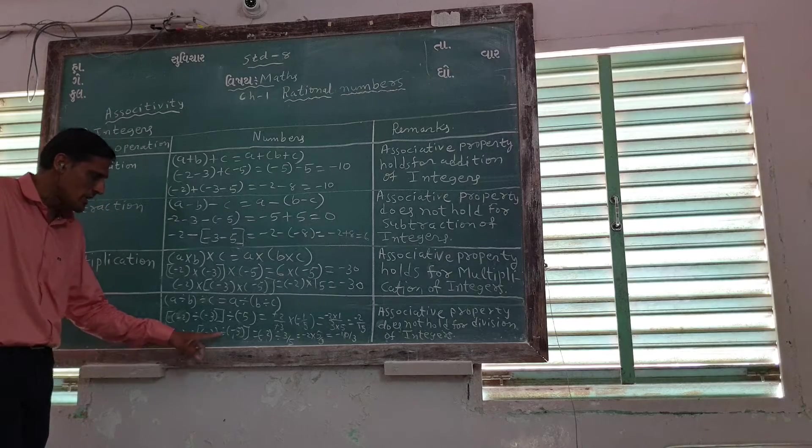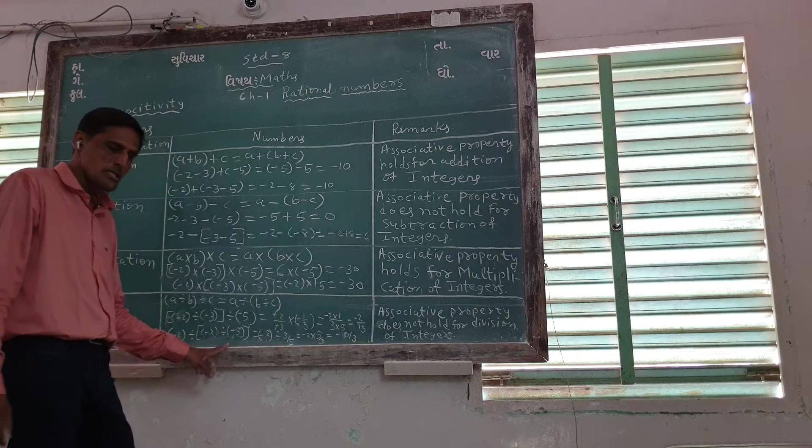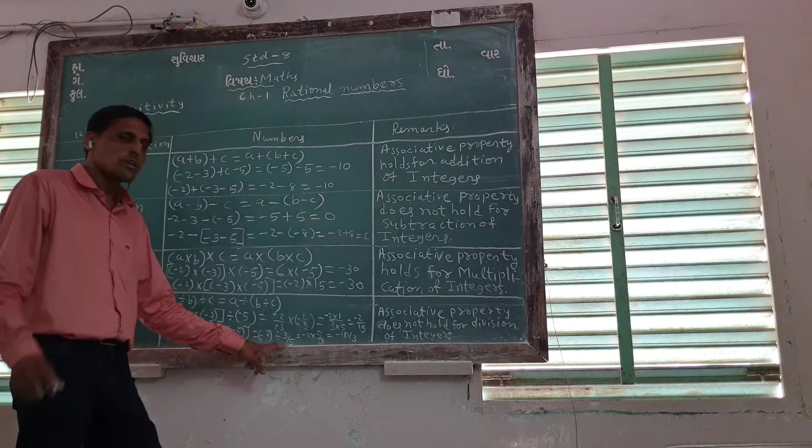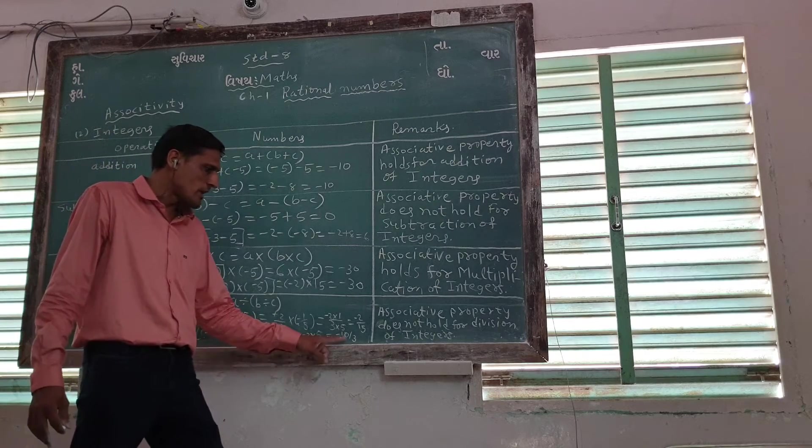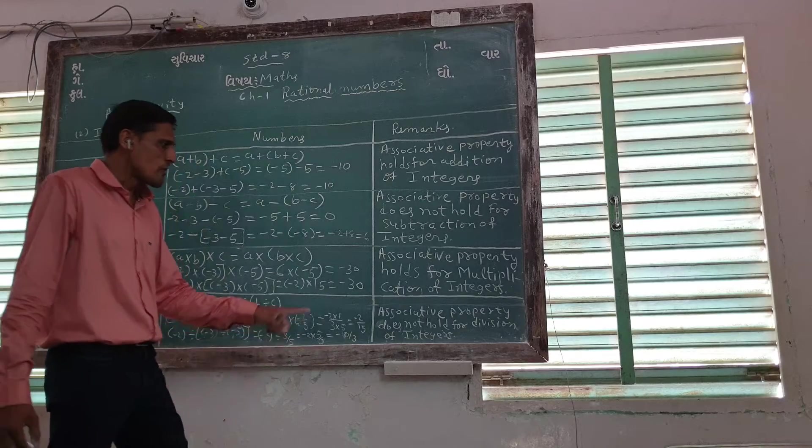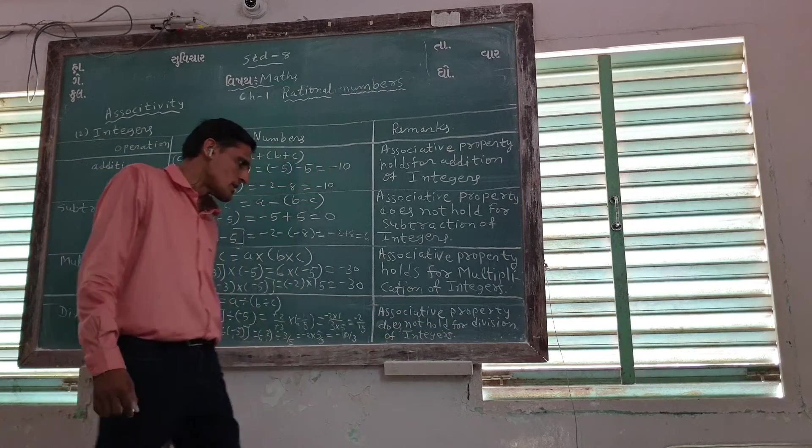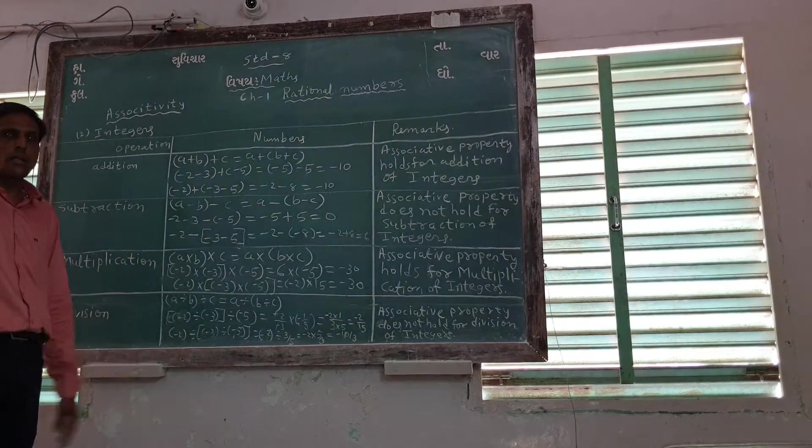Then minus 2 divided by minus 3 divided by minus 5, so minus 2 divided by 5. We can write associative property does not hold for the reason of, both answers are different. We can write what they are different.